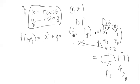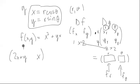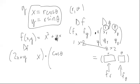Let's compute the pieces. The partial derivative f_x is 2x plus y, and f_y is just x. That gives us the df matrix. For the dg matrix: the derivative of x with respect to r — since x equals r cosine theta — is just cosine theta. And the derivative of y with respect to r — since y equals r sine theta — is just sine theta.